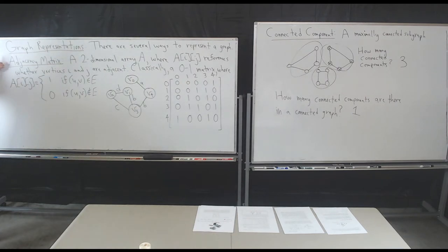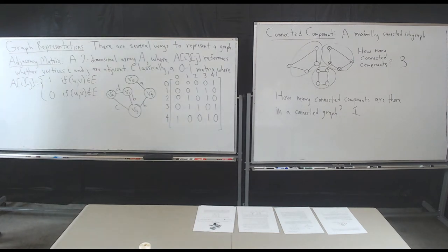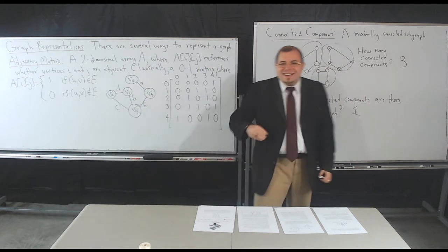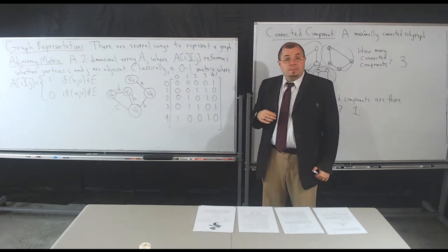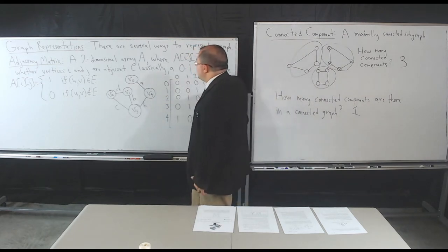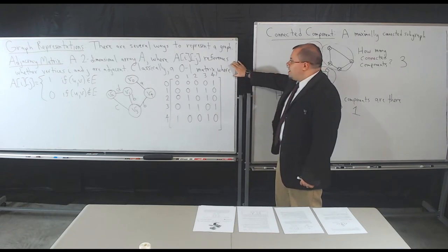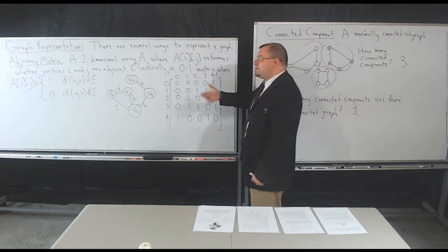The first representation I want to talk about is a classic called an adjacency matrix. In an adjacency matrix, you have a two-dimensional array where each element tells you whether vertex I and vertex J are adjacent or not. I and J are the positions. I'm going to assume that each element in this array can be indexed into by the vertex. There's a mapping between the labels of the vertices and numbers from zero to n minus one. It's a two-dimensional n-by-n array.